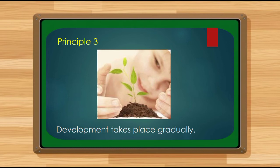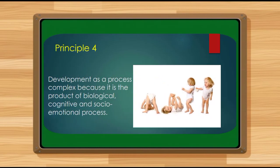The last principle is that development is a complex process because it is the product of biological, cognitive, and socio-emotional processes. These biological, cognitive, and socio-emotional processes are inextricably intertwined — each process will really affect and influence the others. While these processes are studied separately, the effect of one process or factor on a person's development is not isolated from the other processes.